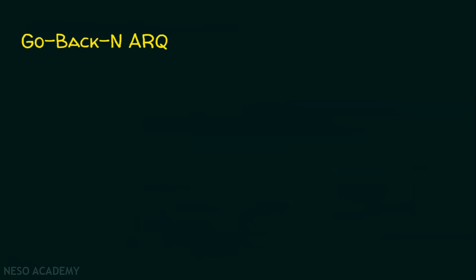In Go-Back-N ARQ, what is this N? N is the sender window size. Suppose if we say Go-Back-3, then 3 is the sender's window size — it means 3 frames can be sent at a time before expecting an acknowledgement from the receiver. If it is Go-Back-5, then 5 frames can be sent before expecting an acknowledgement. We are going to see an animation to understand what N is and its significance.